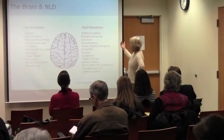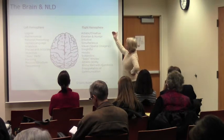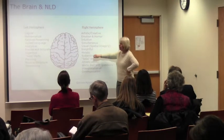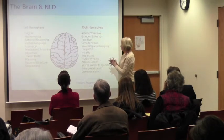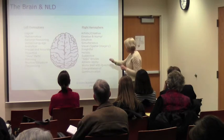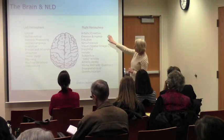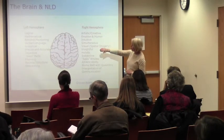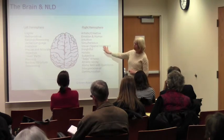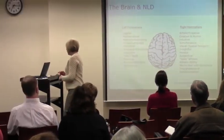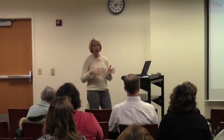Therefore, some functions like emotion, humor, visual-spatial processing, holistic thinking — being able to see the whole rather than just parts — athletics, and interpreting communication are some of the functions the right side of the brain handles that don't work as well when someone has a nonverbal learning disability. That's why we call it 'nonverbal' — because it affects the nonverbal parts of function.